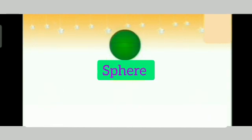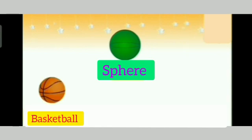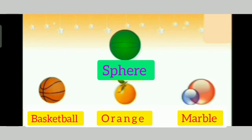And the next shape is sphere. And few objects like basketball, orange and marbles. These all appear to be spherical in shape.